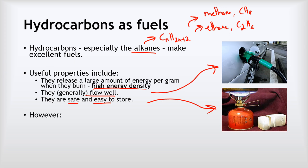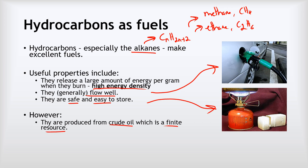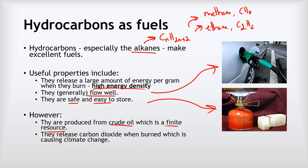The downsides to hydrocarbons as fuels are that overwhelmingly they are produced from crude oil, which is a finite resource — meaning we are using it faster than it's being produced, so at some point we don't quite know when that supply of hydrocarbons will run out. The other, even bigger problem is that they release carbon dioxide when burned, and that is causing climate change, which is the biggest collective problem facing not just humans but all living things on this planet.